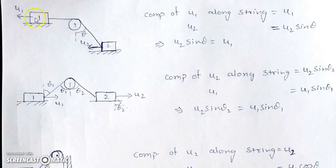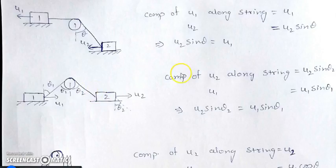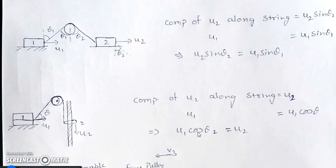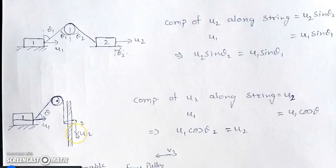In the following examples, the same principle applies: the component of velocities along the rope must be equal. In one example, two blocks move with velocities u1 and u2 and we find their relation by taking components along the string: u2 sin θ2 = u1 sin θ1. In another example, a movable ring on a fixed rod moves with speed u2 while a block moves with speed u1. The component of u2 along the string equals u2 itself, while the component of u1 along the string is u1 cos θ.